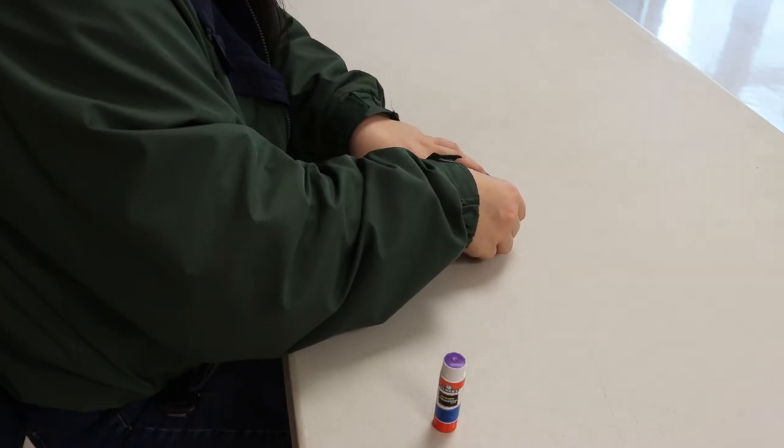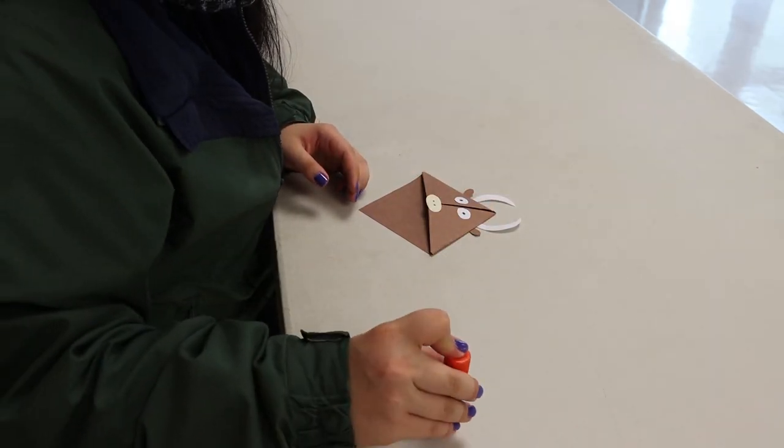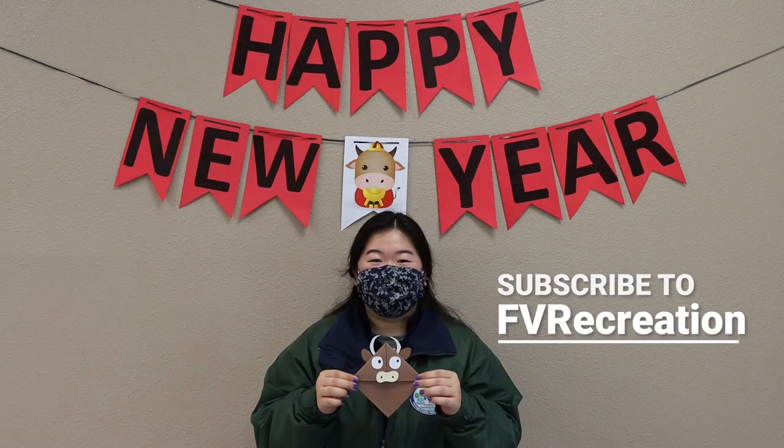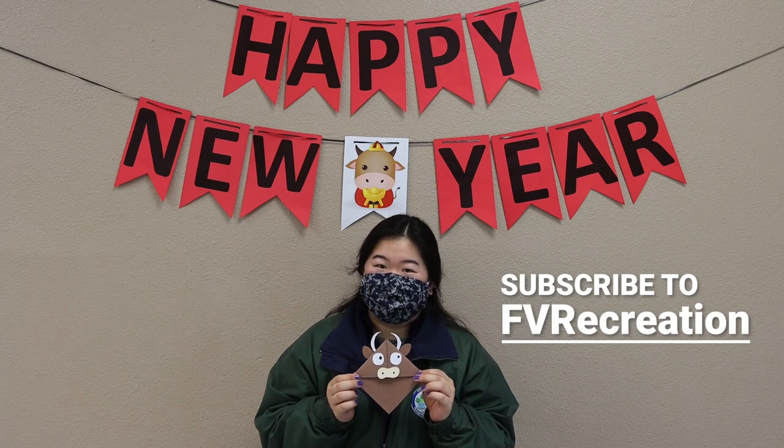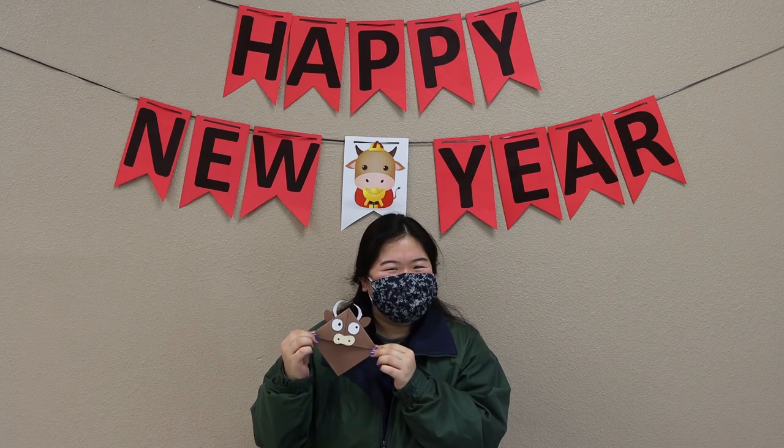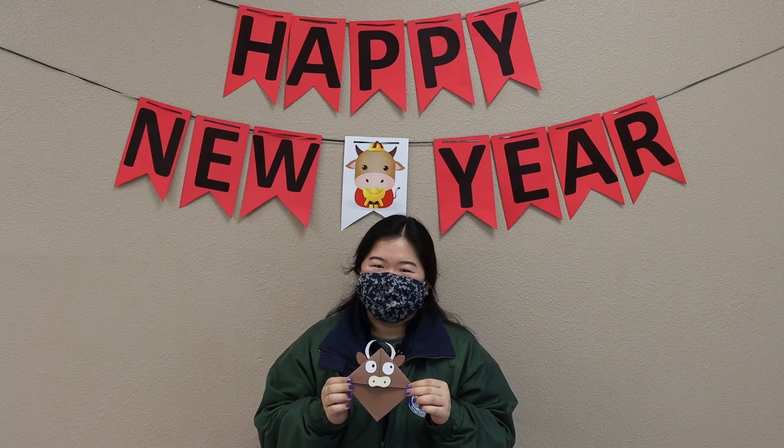Now it's time to personalize it. I'm going to add some ears. You could maybe add eyebrows if you want, maybe give it a little smile. It's up to you whatever you want to add. There we have it, your very own ox bookmark. I hope you guys do lots of reading this year and don't forget to name yours. I've decided to name mine Billy. We'd love to see your crafts as well, so make sure you post a picture to social media and use the hashtag FV Play and FV Fun at Home. See you later!